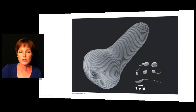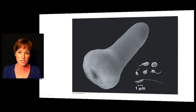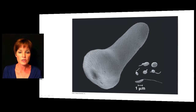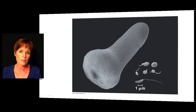Even for those that are unicellular, there can still be a large range of sizes. All of these cells on this slide are considered protists, and you can see they can be quite large or they can be very tiny, like what you would consider a bacteria to be.